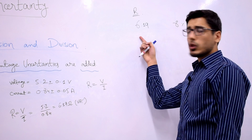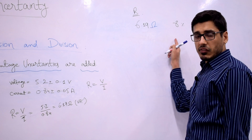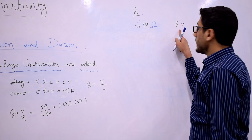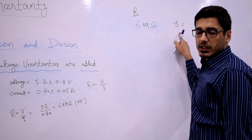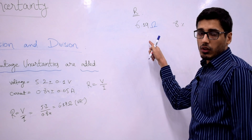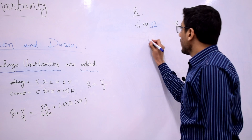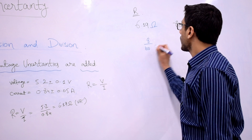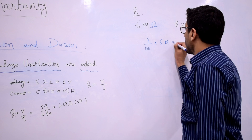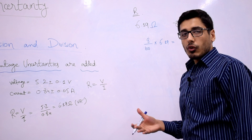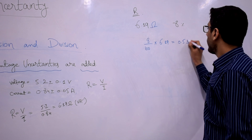At this point I have the calculated value of R which is 6.19 ohm and the percentage uncertainty we just calculated, which is 8%. I need to convert this percentage uncertainty to absolute uncertainty for the value of resistance. We can simply do that by dividing 8 by 100 and multiplying it with 6.19. The result is approximately 0.5 ohm.